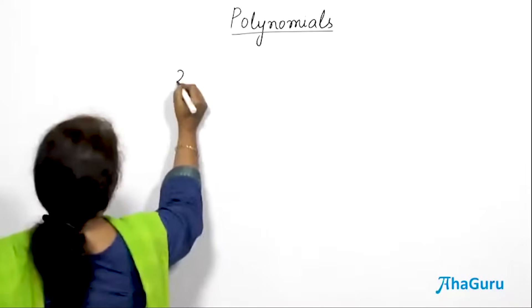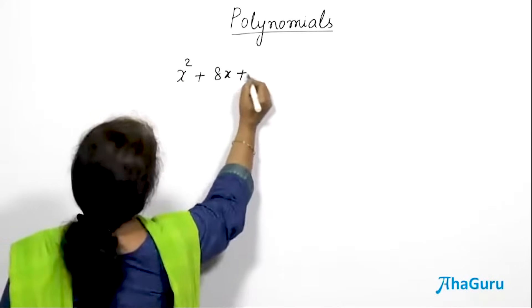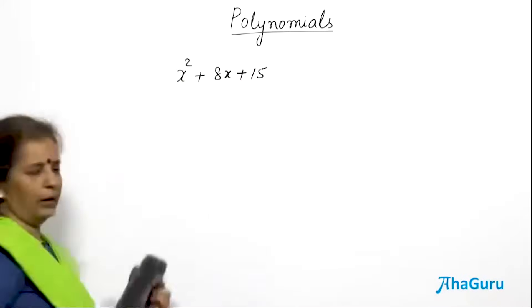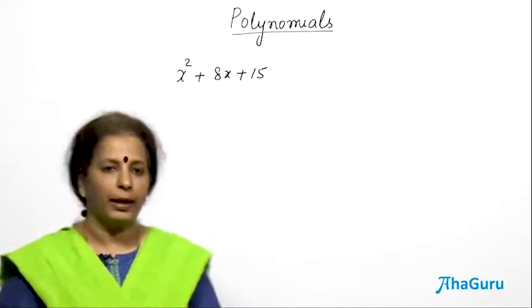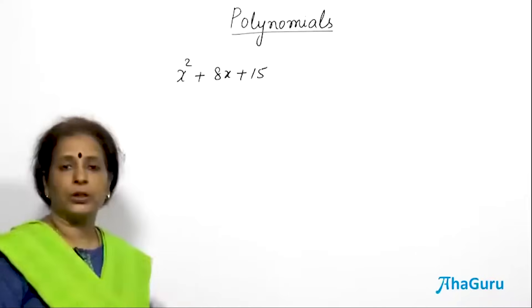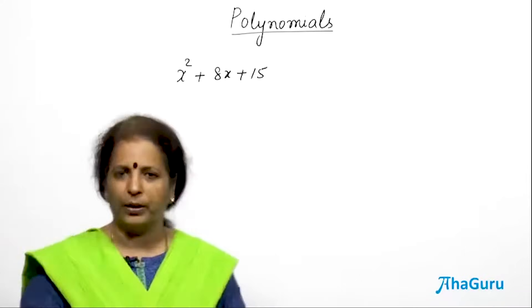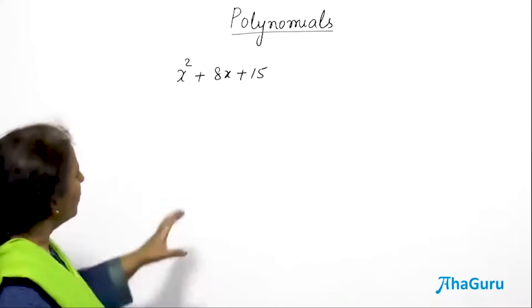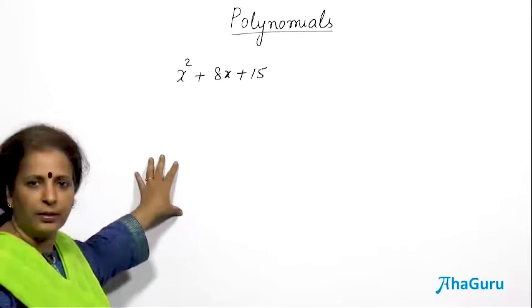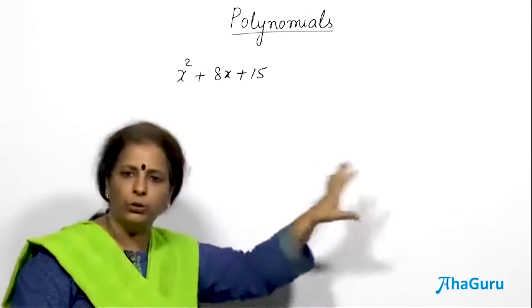Let us take a simple polynomial of the type x squared plus 8x plus 15. The highest power of the variable x is 2, so this is known as a quadratic polynomial. Now, we will find the factors.